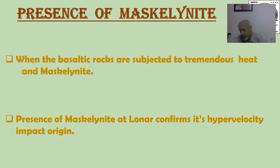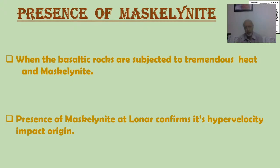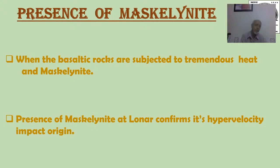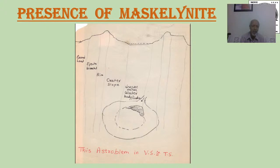One important word I want to explain is maskelynite. Maskelynite is a unique mineral formed only where there is hypervelocity impact — it is not observed in volcanic craters. When a rock is subjected to tremendous heat and pressure, certain phases within it convert into maskelynite. The presence of maskelynite at Lonar confirms that it is a hypervelocity impact crater and not volcanic in origin.